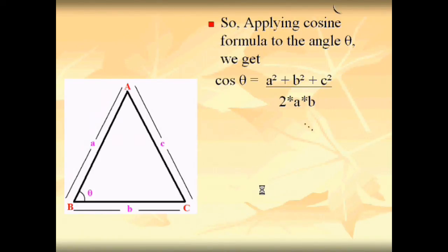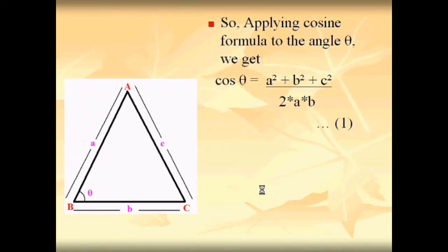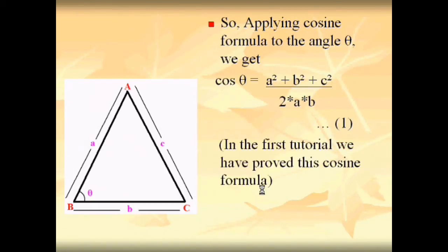This is the cosine formula for the triangle, numbered as equation one. In the first tutorial we proved this cosine formula — please check out the first tutorial for the proof of the cosine formula.